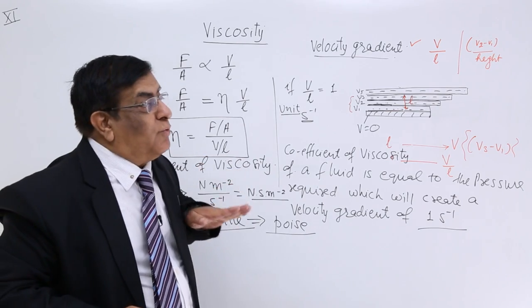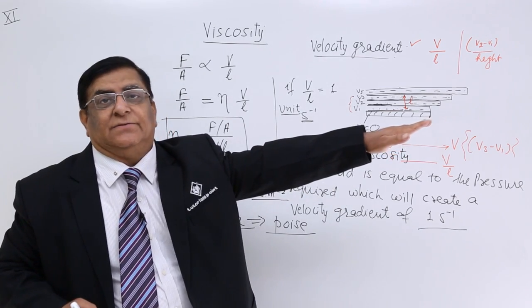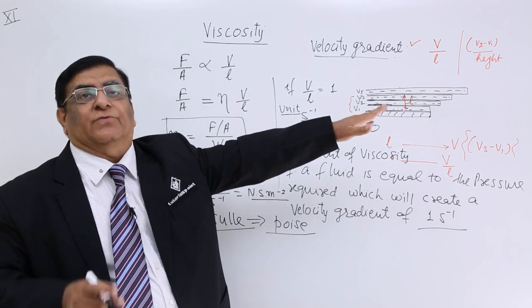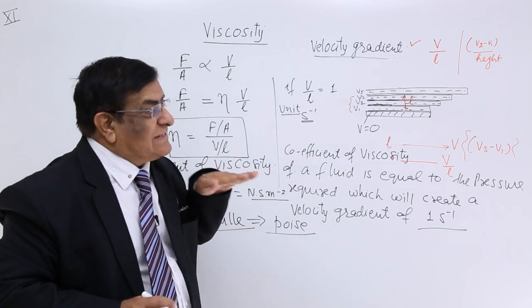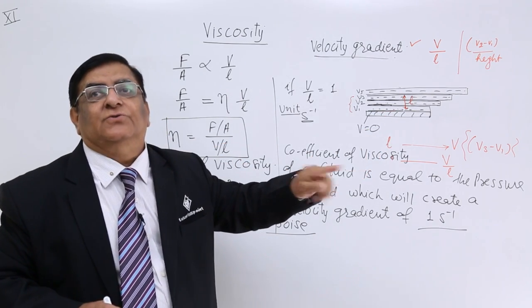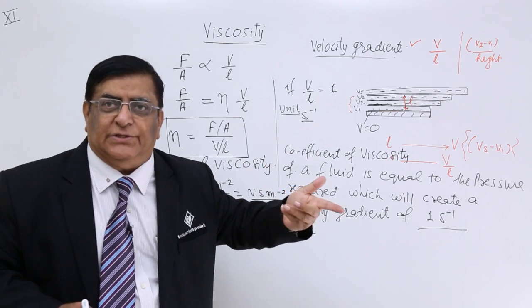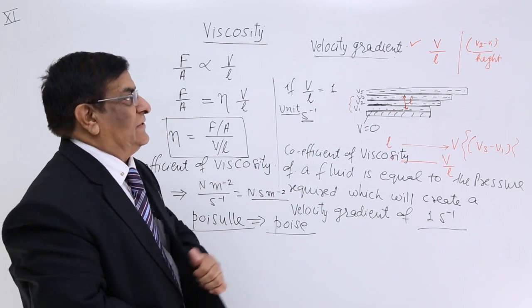In water, more is the velocity gradient. It goes away, so viscosity is less. In honey, less is the velocity gradient, so more is the viscosity. It is more viscous. This is viscosity.